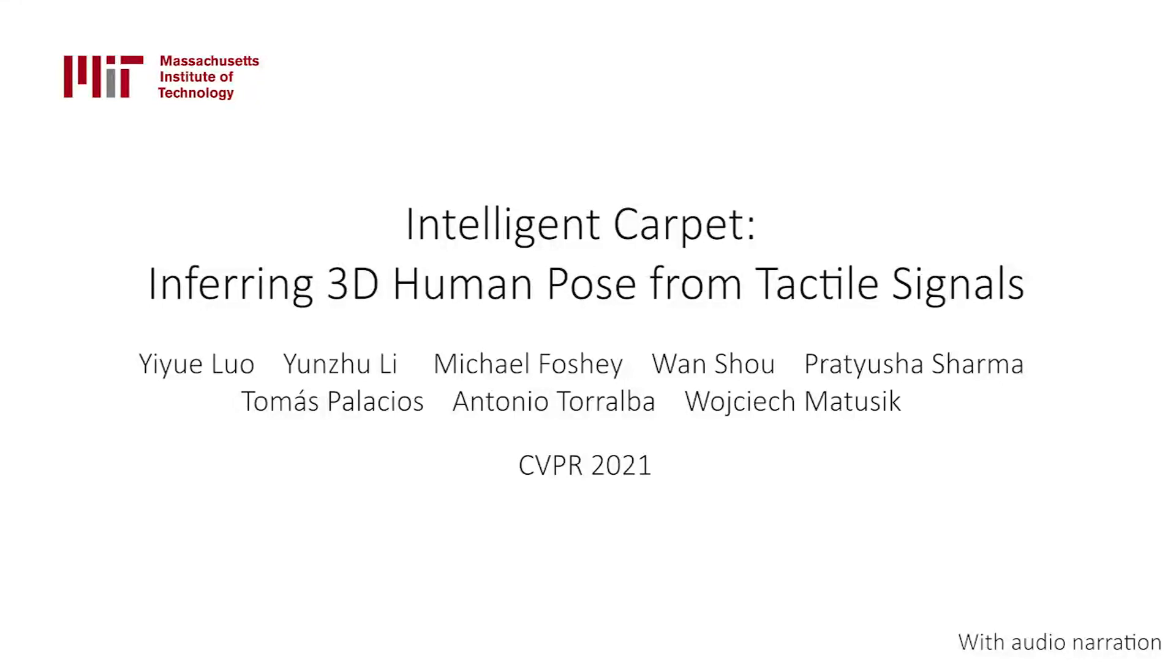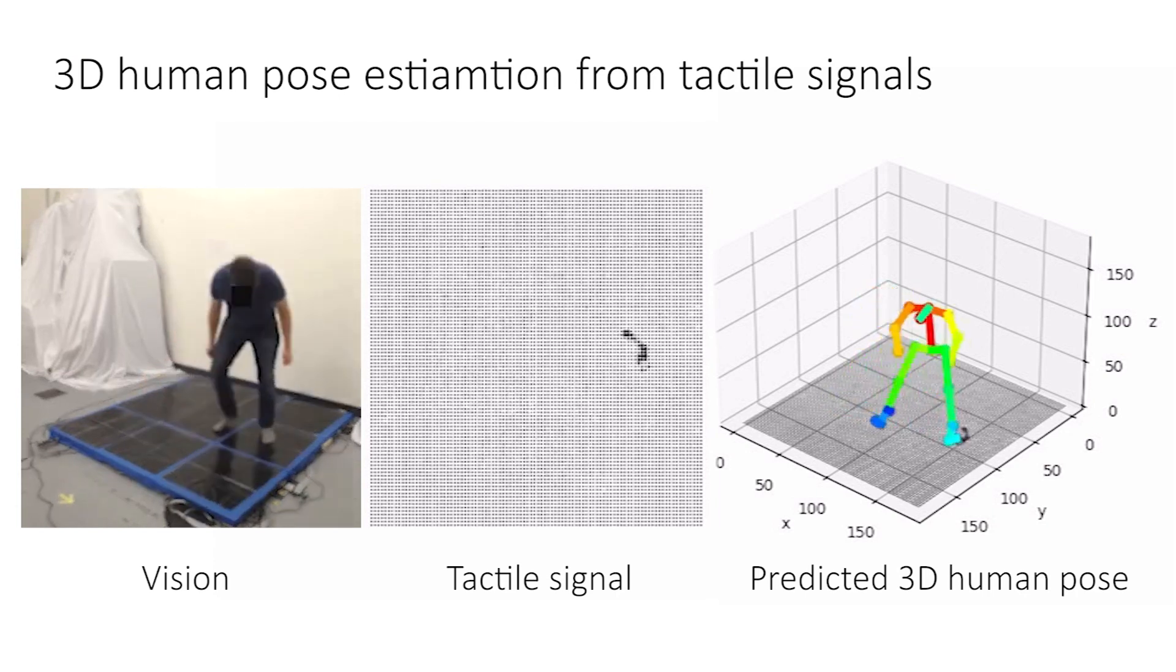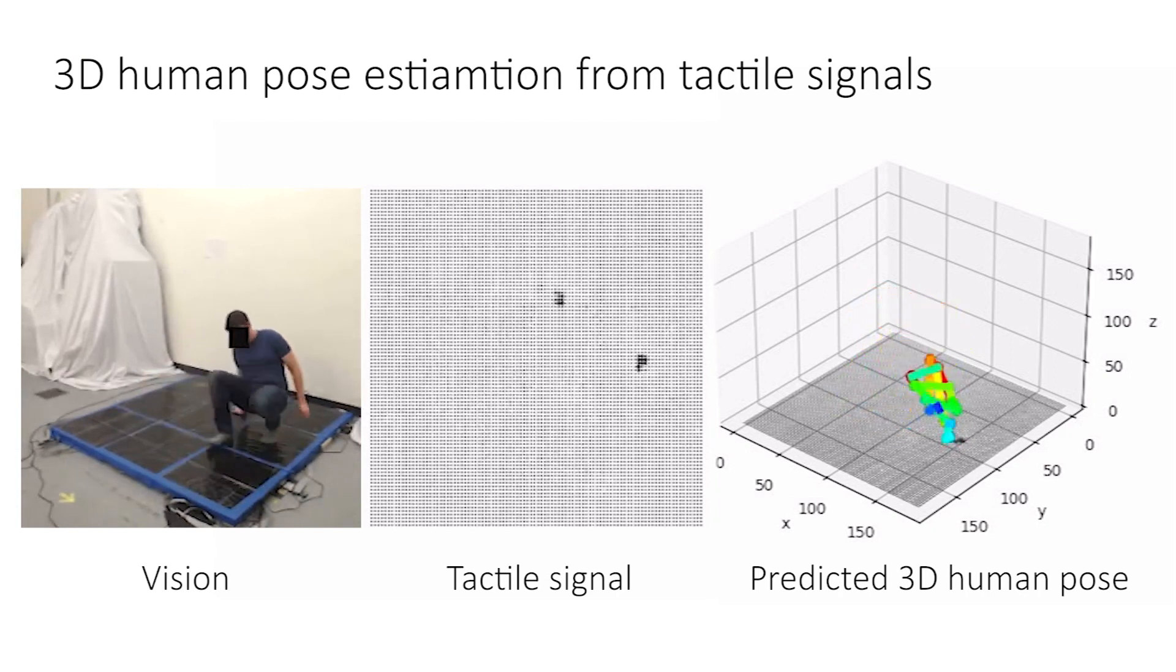We introduce 3D human pose estimation from tactile signals. Daily human activities are guided by the tactile interactions between human and the ground. Leveraging such interactions and using vision as supervision, we present a 3D human pose estimation approach using only the pressure maps recorded by a tactile sensing carpet.